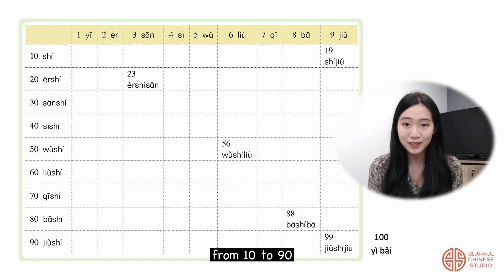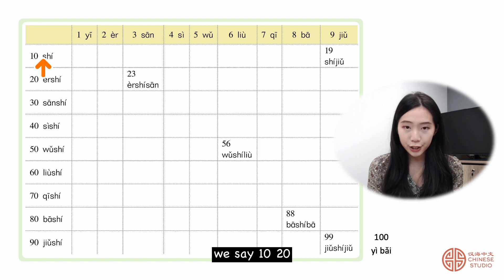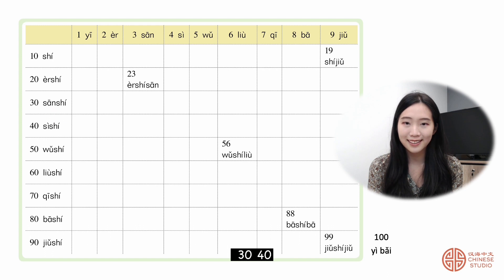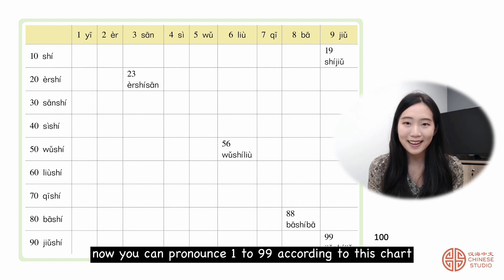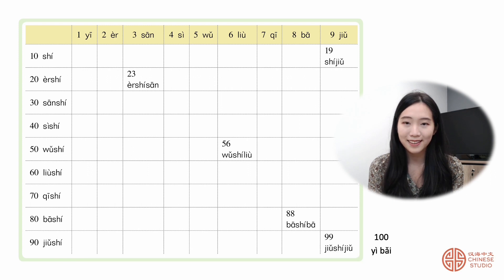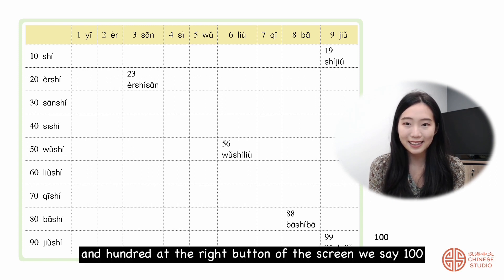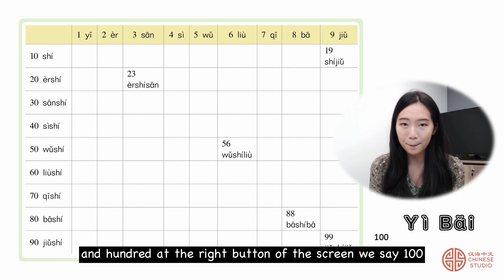From 10 to 90, we say: 十, 二十, 三十, 四十, 五十, 六十, 七十, 八十, 九十. Now you can pronounce 1 to 99 according to this chart. And 100, at the right bottom of the screen, we say 一百.